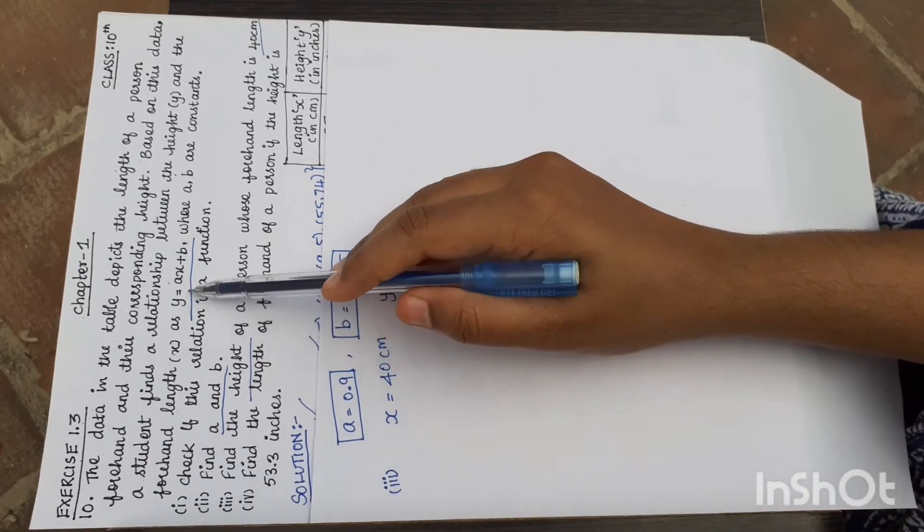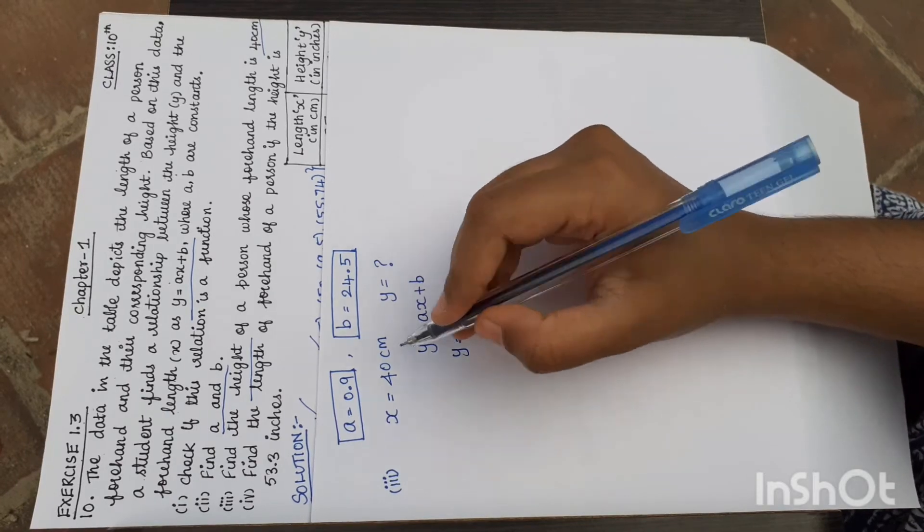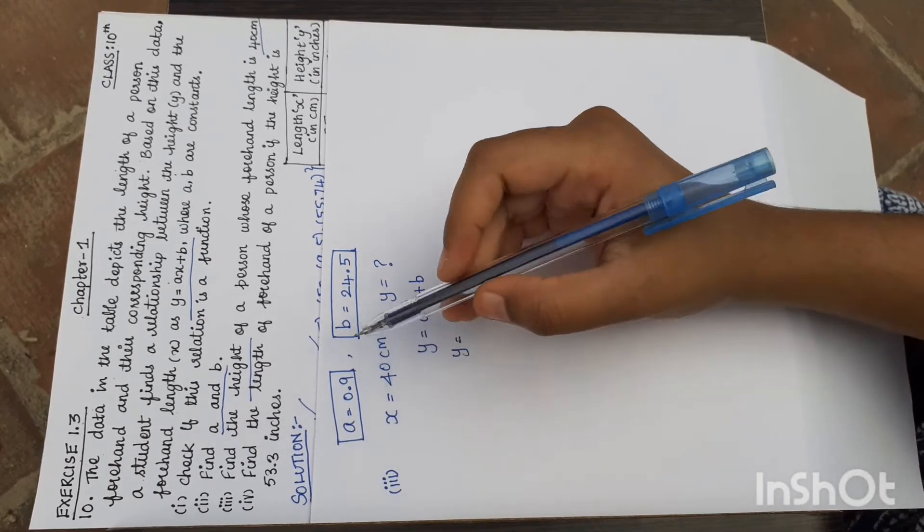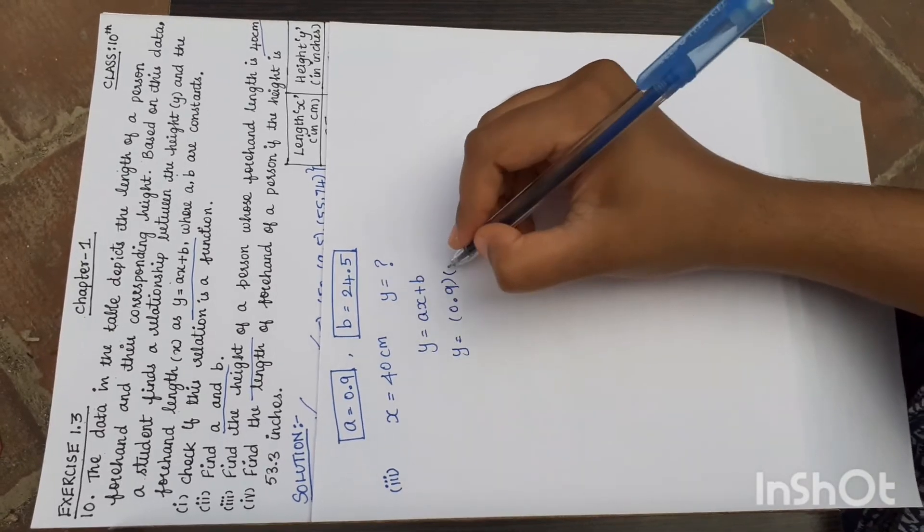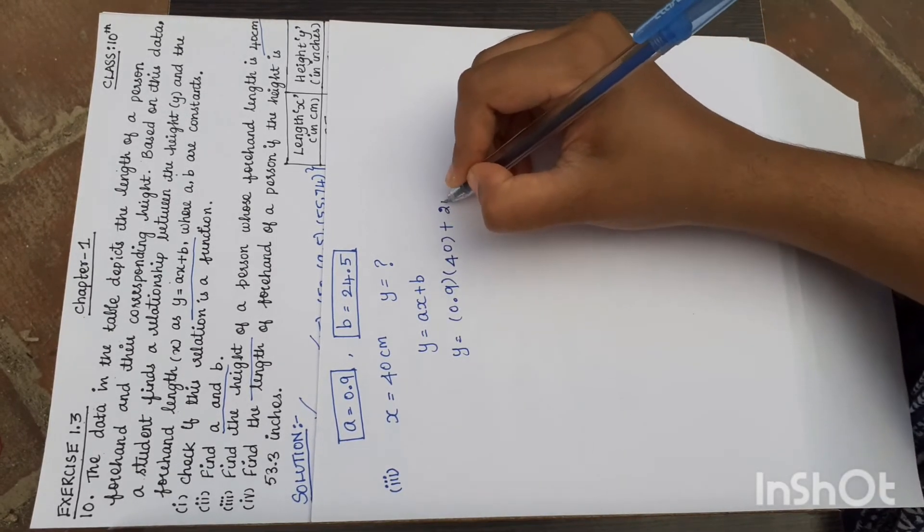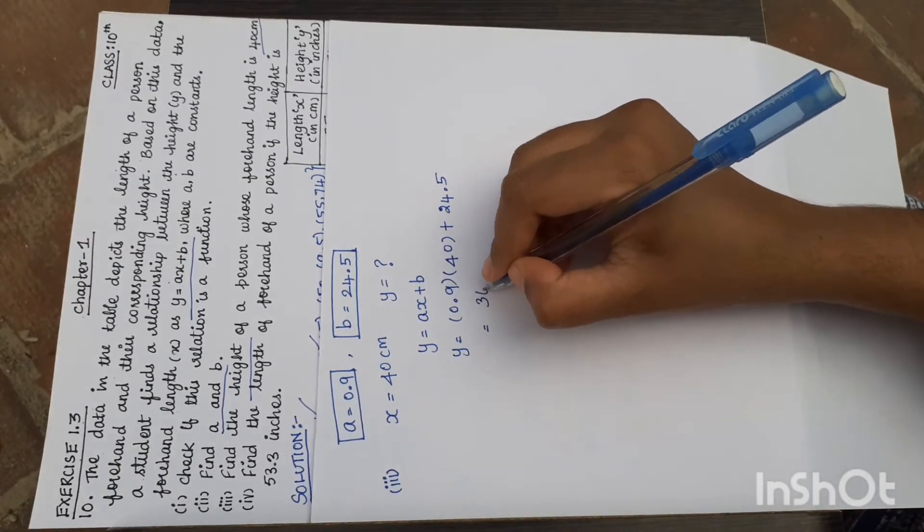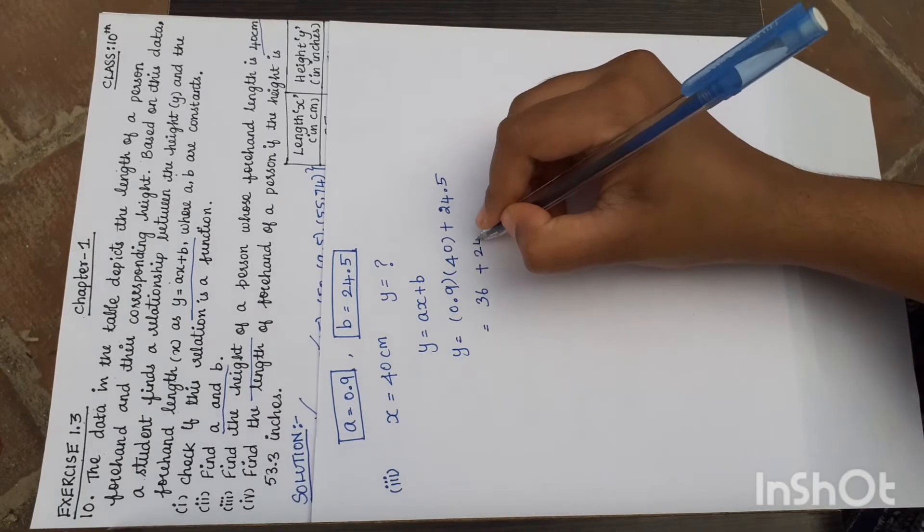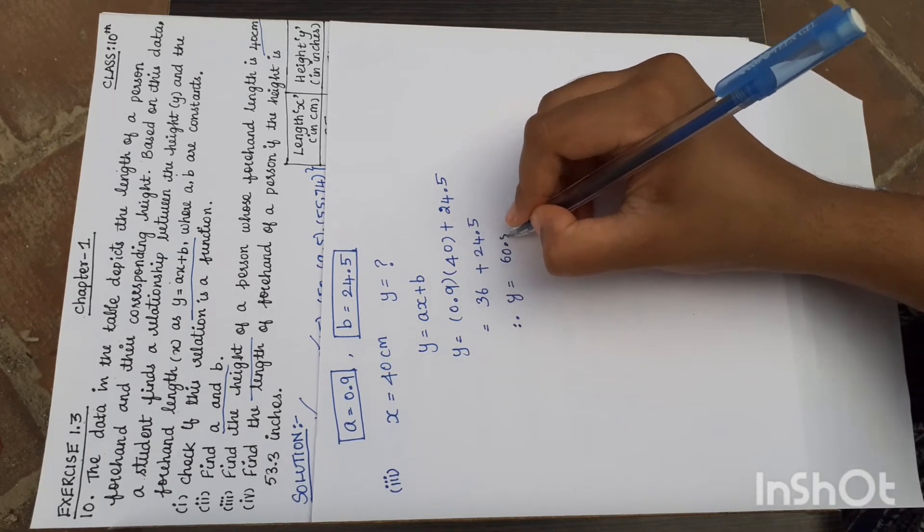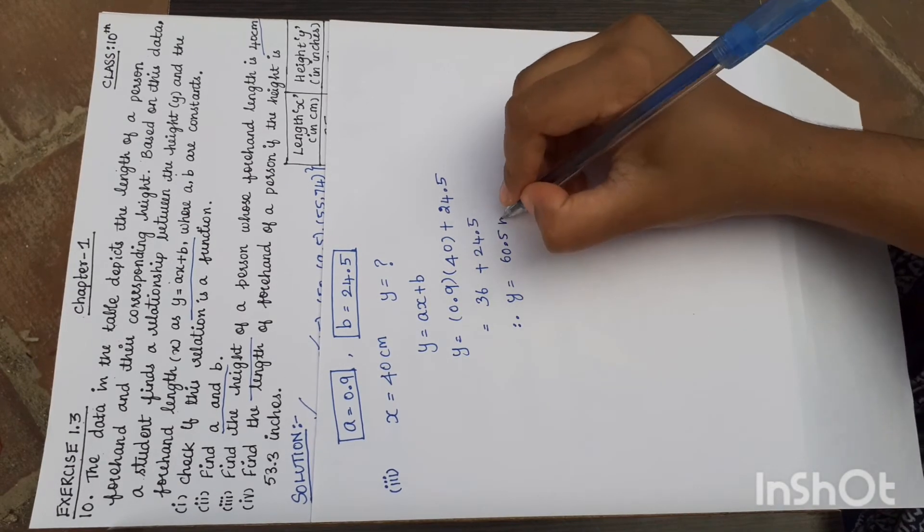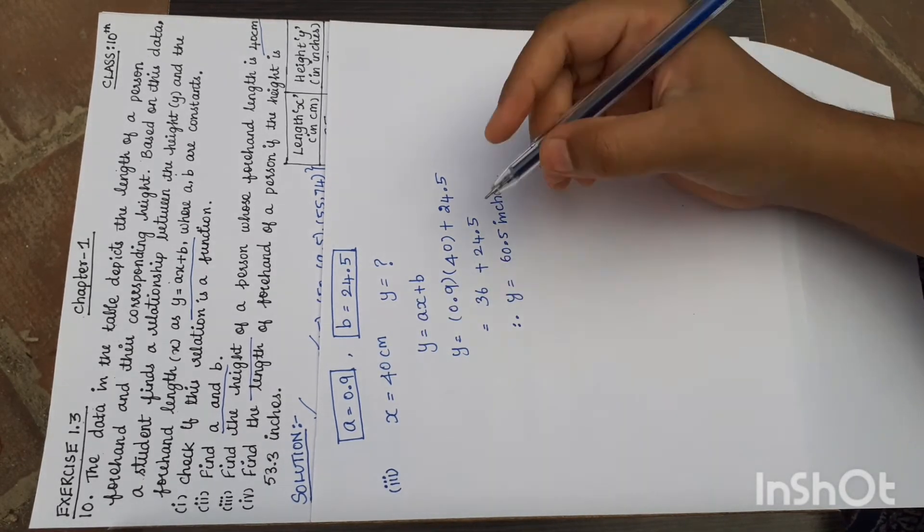Using y equals ax plus b, where a is 0.9, x is 40, and b is 24.5. So y equals 0.9 times 40 plus 24.5. 0.9 times 40 equals 36 plus 24.5. Therefore, the height is 36 plus 24.5 equals 60.5 inches. When forehand length is 40 cm, height is 60.5 inches.